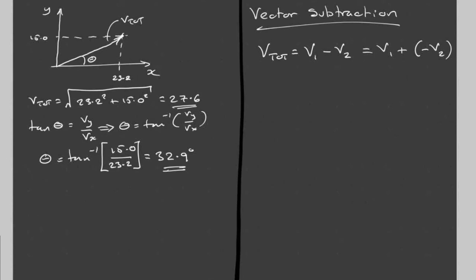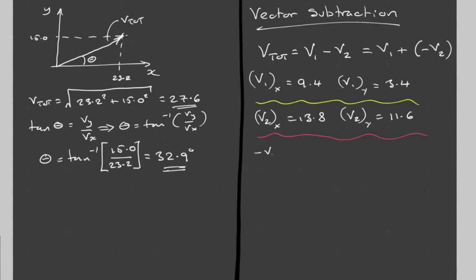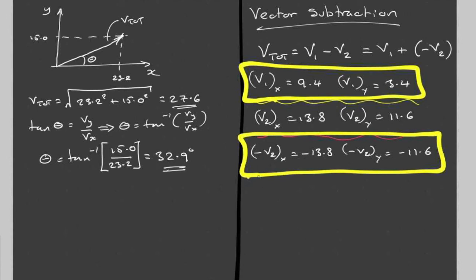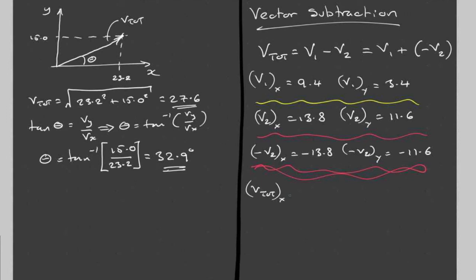We've already got the vector components worked out, so let's look at that. Minus v2x is minus 13.8, and minus v2y is minus 11.6. We just take the x value and the y value and change the sign. I have v1 and I have minus v2. I'm going to add them together because v1 minus v2 is v1 plus minus v2. So v total x is 9.4 plus minus 13.8, which is minus 4.4, and v total y is 3.4 plus minus 11.6, which is minus 8.2. So we now have the components for the resultant vector.